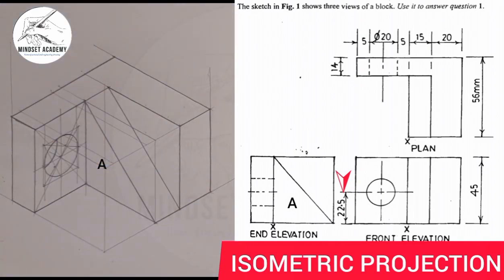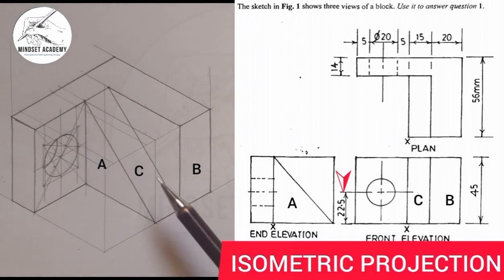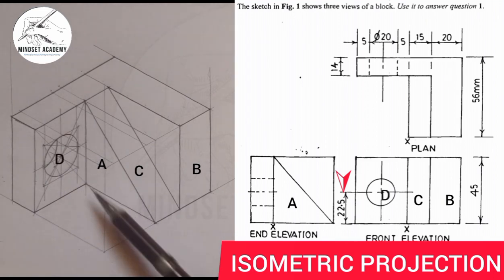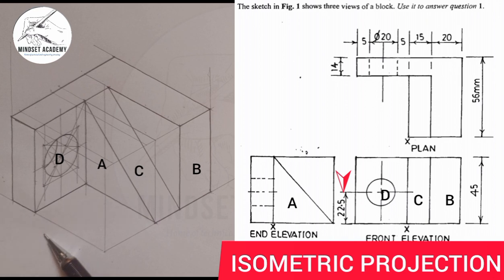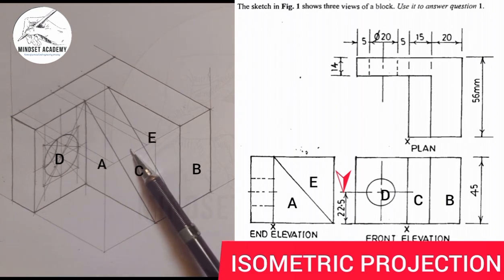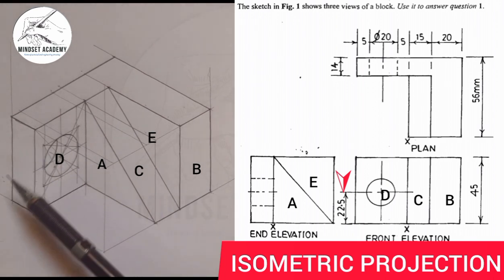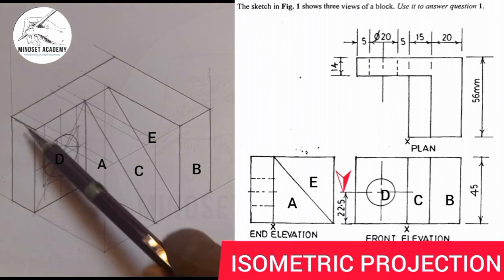Now let's compare this with what we have on the left-hand side. Looking from the front elevation, we can see the inclined line as a straight line, the two slant lines, and the circle. For the end view, I can see these parts where my arrow is pointing — but this line here is blocked by the other line, so it appears as a straight line.